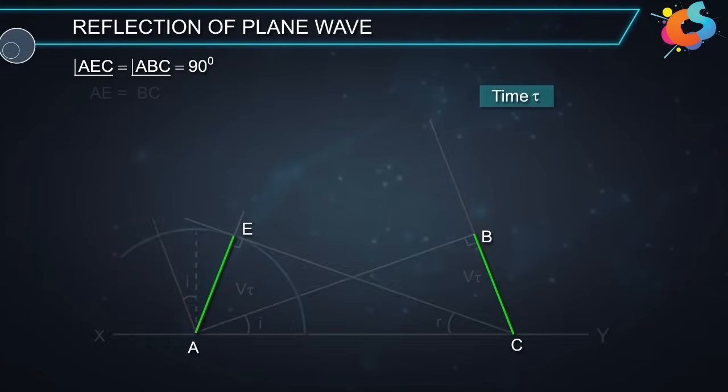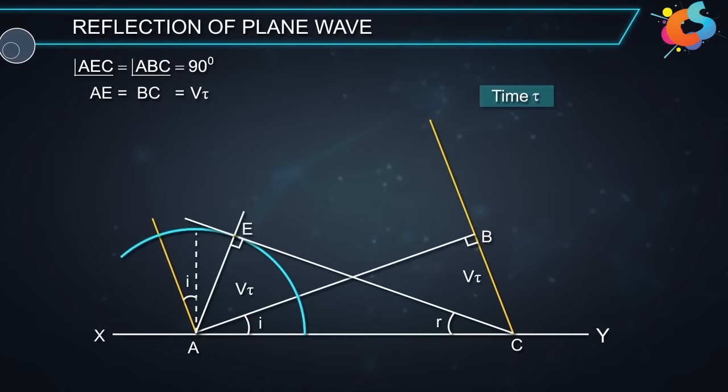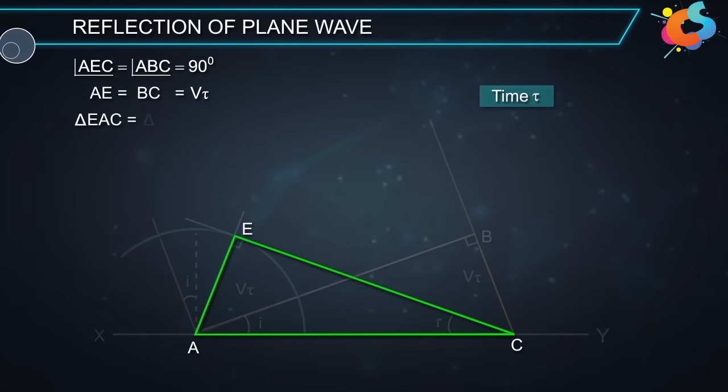Side AE and side BC are both equal to V tau and AC is common for both the triangles. Therefore, we can say that triangle EAC and triangle BAC are congruent.